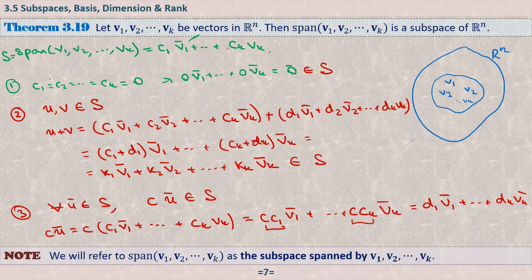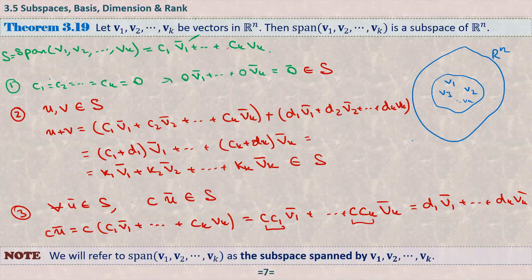We will now refer to Span{v1, v2, …, vk} as the subspace spanned by the vectors v1, v2, …, vk.